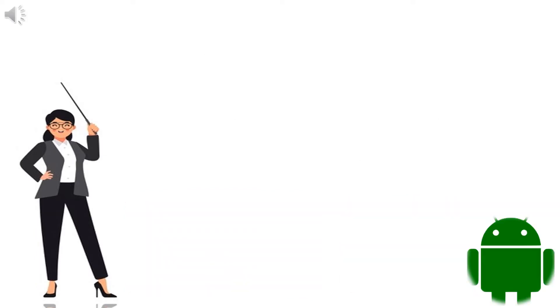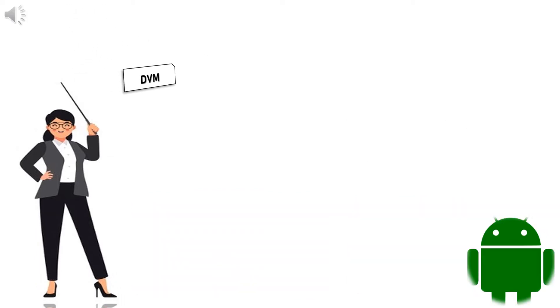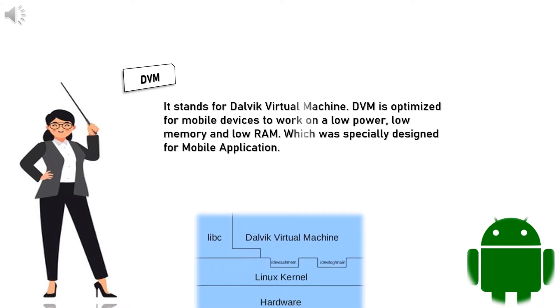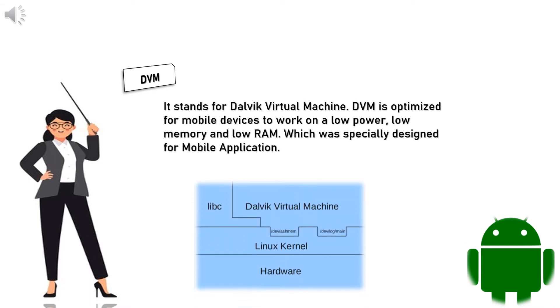3. DVM — DVM stands for Dalvik Virtual Machine. DVM is optimized for mobile devices to work on low power, low memory and low RAM, which was specially designed for mobile applications.